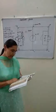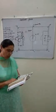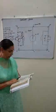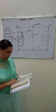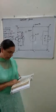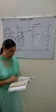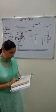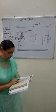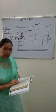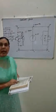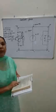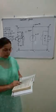The duration of the game: the game is divided into two equal periods of 45 minutes each, with an interval of 5 to 10 minutes. In case of equal goals, extra time of 30 minutes will be given — 15 minutes for each team.